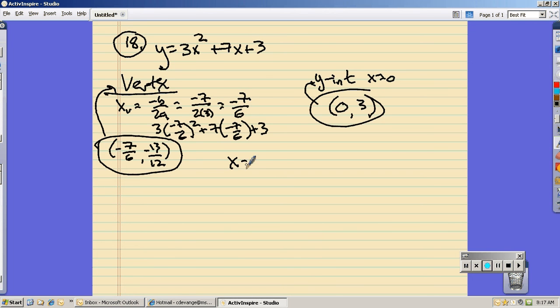And then x-intercepts. That's when y equals 0. So, 0 equals 3x squared plus 7x plus 3.